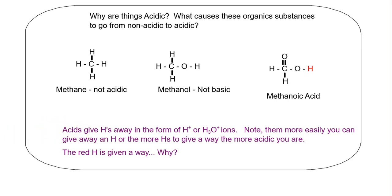So, again, as we kind of wrap up this first thing, is why are things acidic? What causes these substances, in this case organic substances, to go from non-acidic to acidic. So, here, for example, we have methane, CH4, it's non-acidic. So, none of these H's are really able to escape, to protonate a water molecule to produce this really interesting ion here.